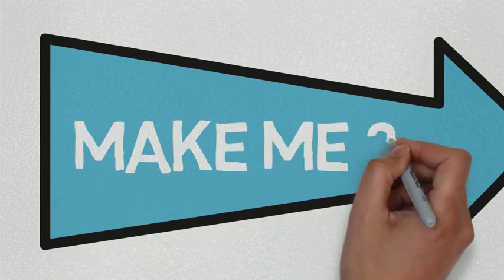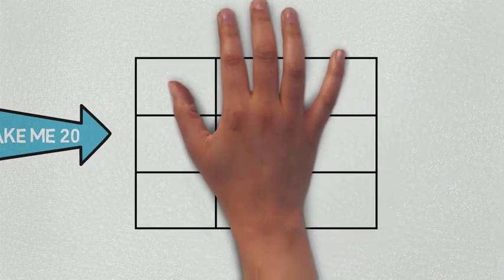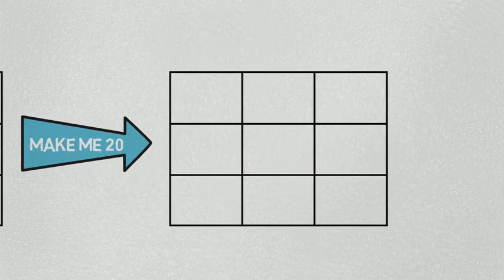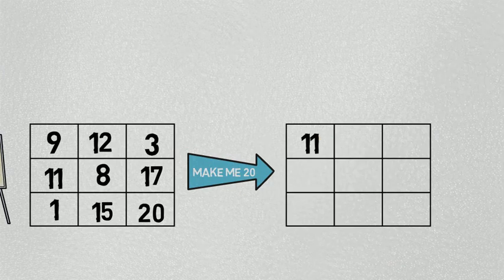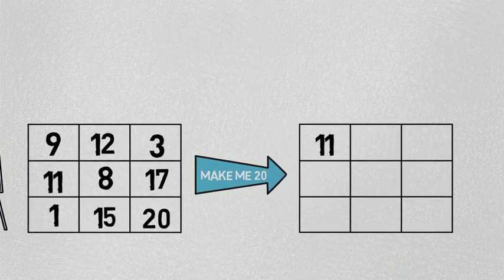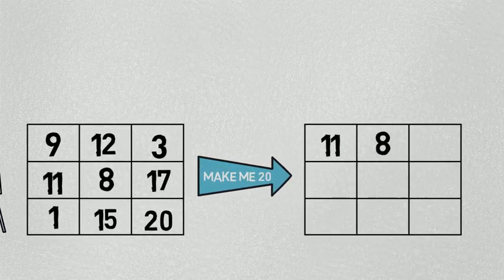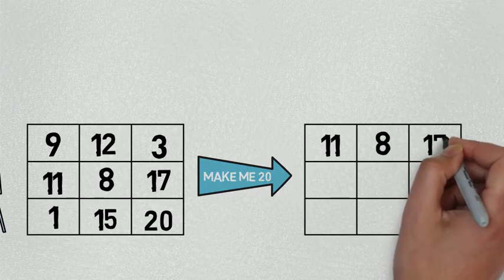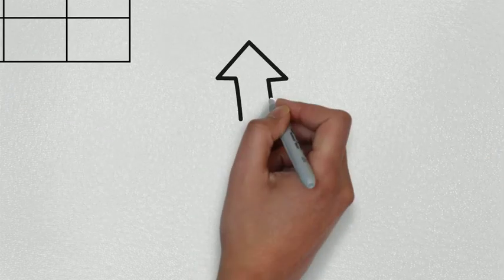So whatever I put in my grid, the children have to put a corresponding number bond in their grid. For example, if I had 9, they have 11. If I had 12, they would write 8. And if I had 3, they would write 17.